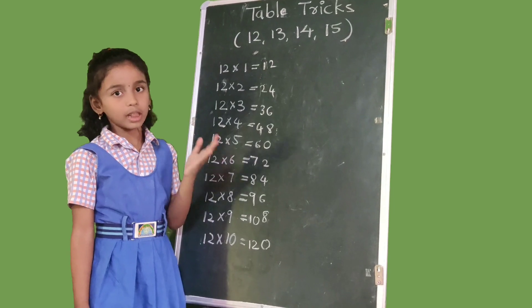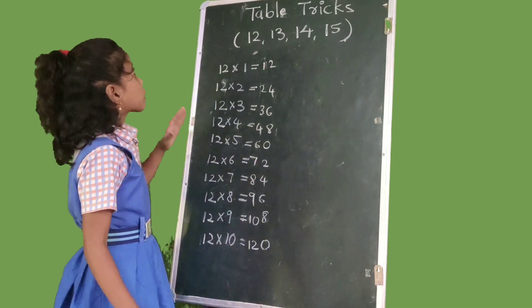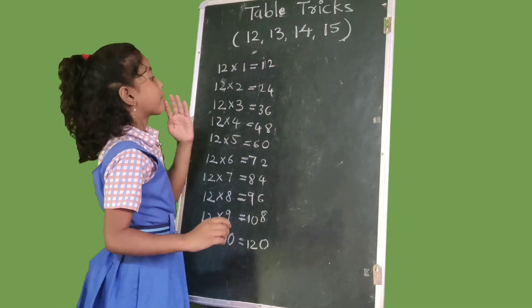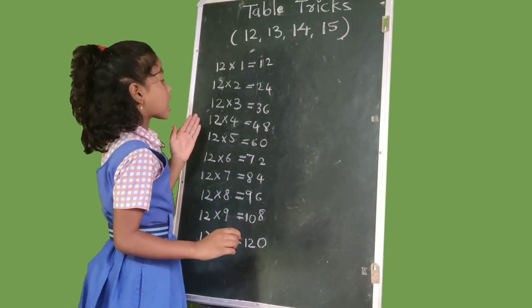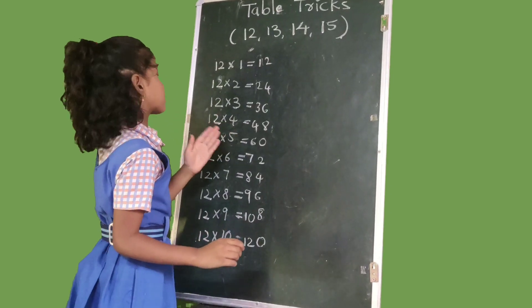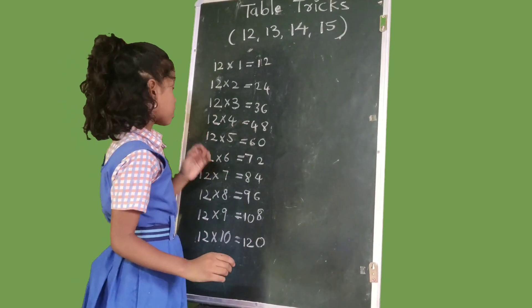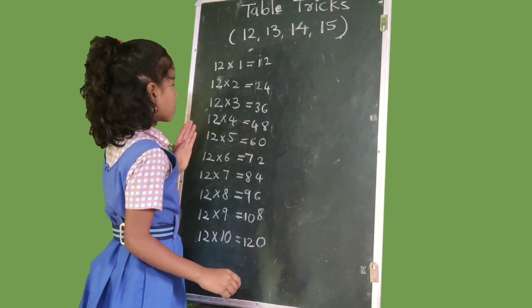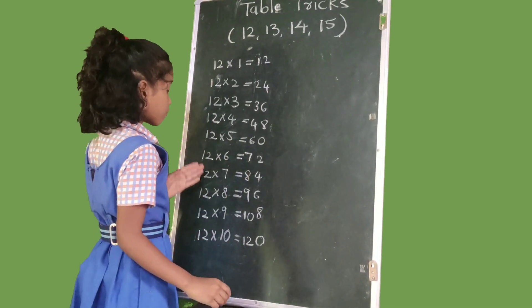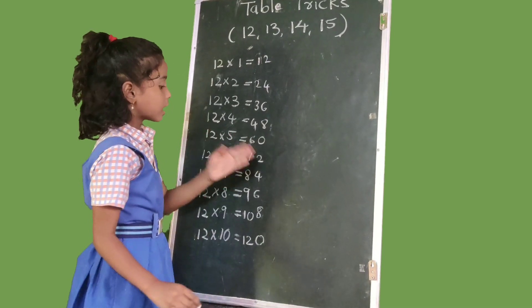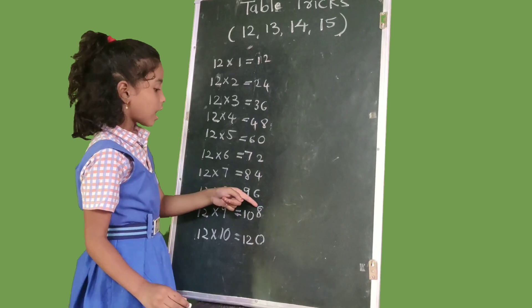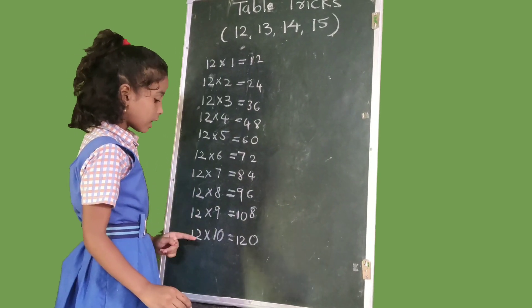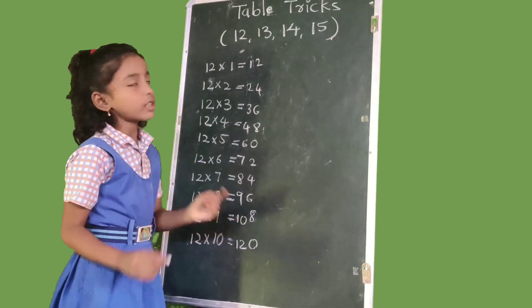Now we write 12 tables: 12×1=12, 12×2=24, 12×3=36, 12×4=48, 12×5=60, 12×6=72, 12×7=84, 12×8=96, 12×9=108, 12×10=120.